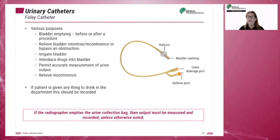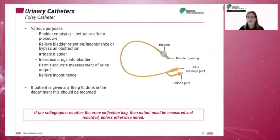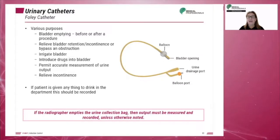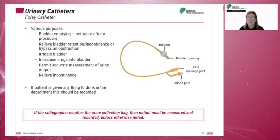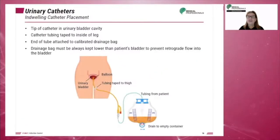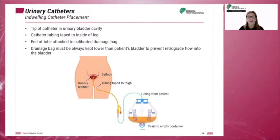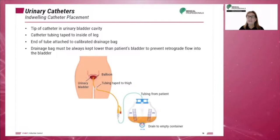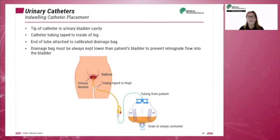If the patient is given anything to drink in the department, this should be recorded. Also, if the radiographer empties the urine collection bag, the output must be measured and recorded unless otherwise noted. To secure the catheter, the tip is placed in the urinary bladder and the catheter tubing is taped to the inside of the leg. The tubing ends in a calibrated drainage bag, which must always be kept lower than the patient's bladder to prevent backflow.